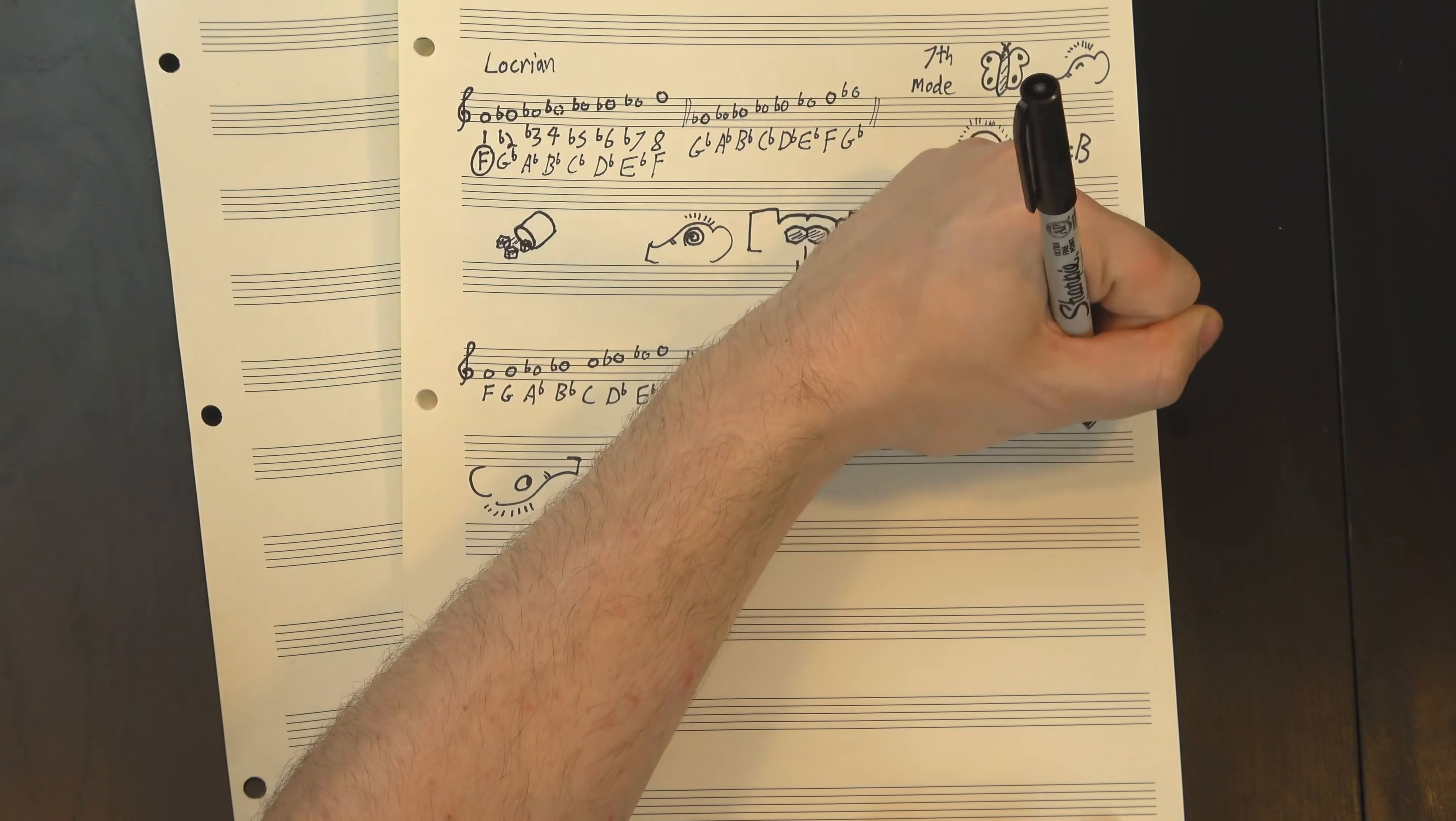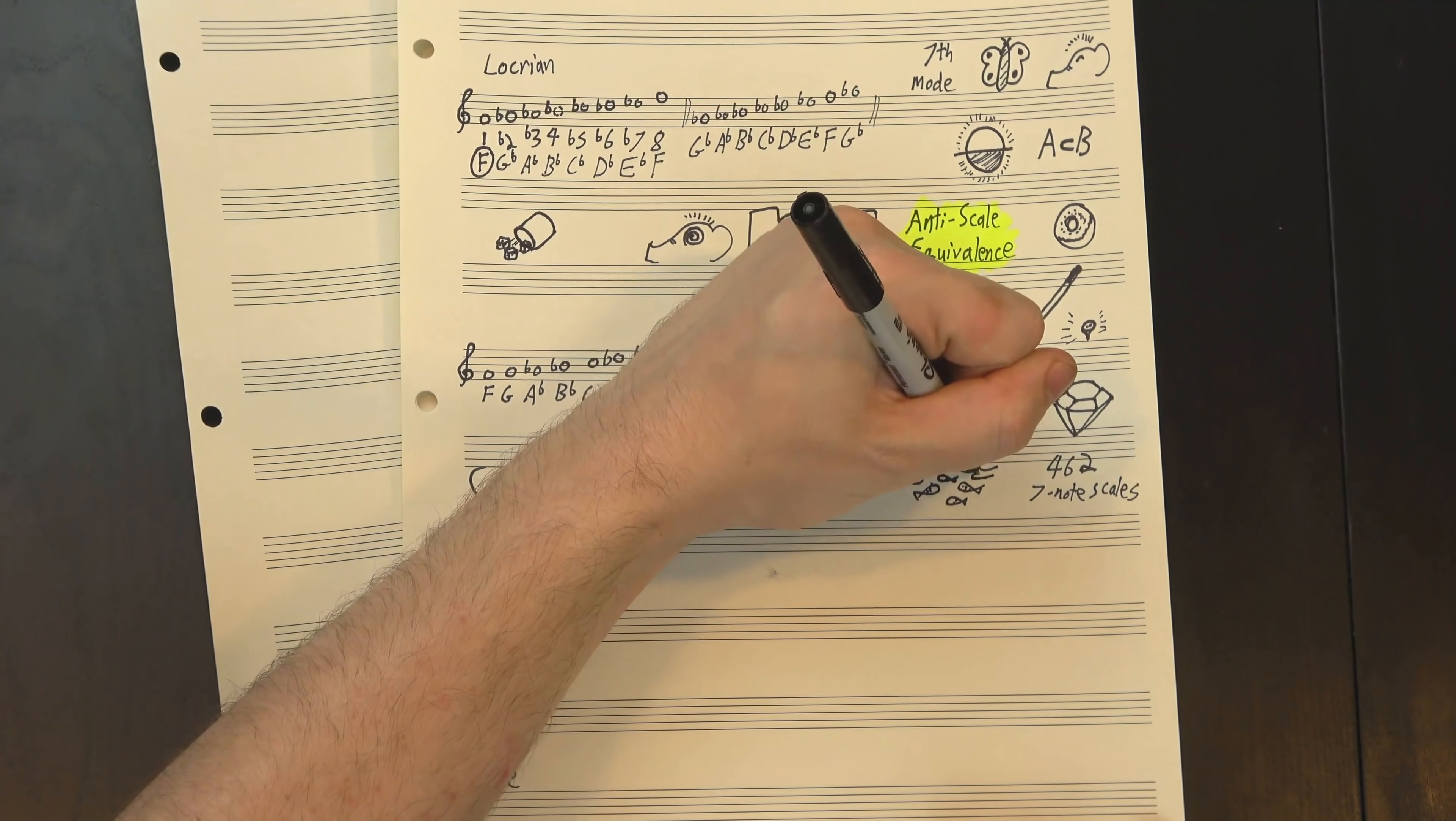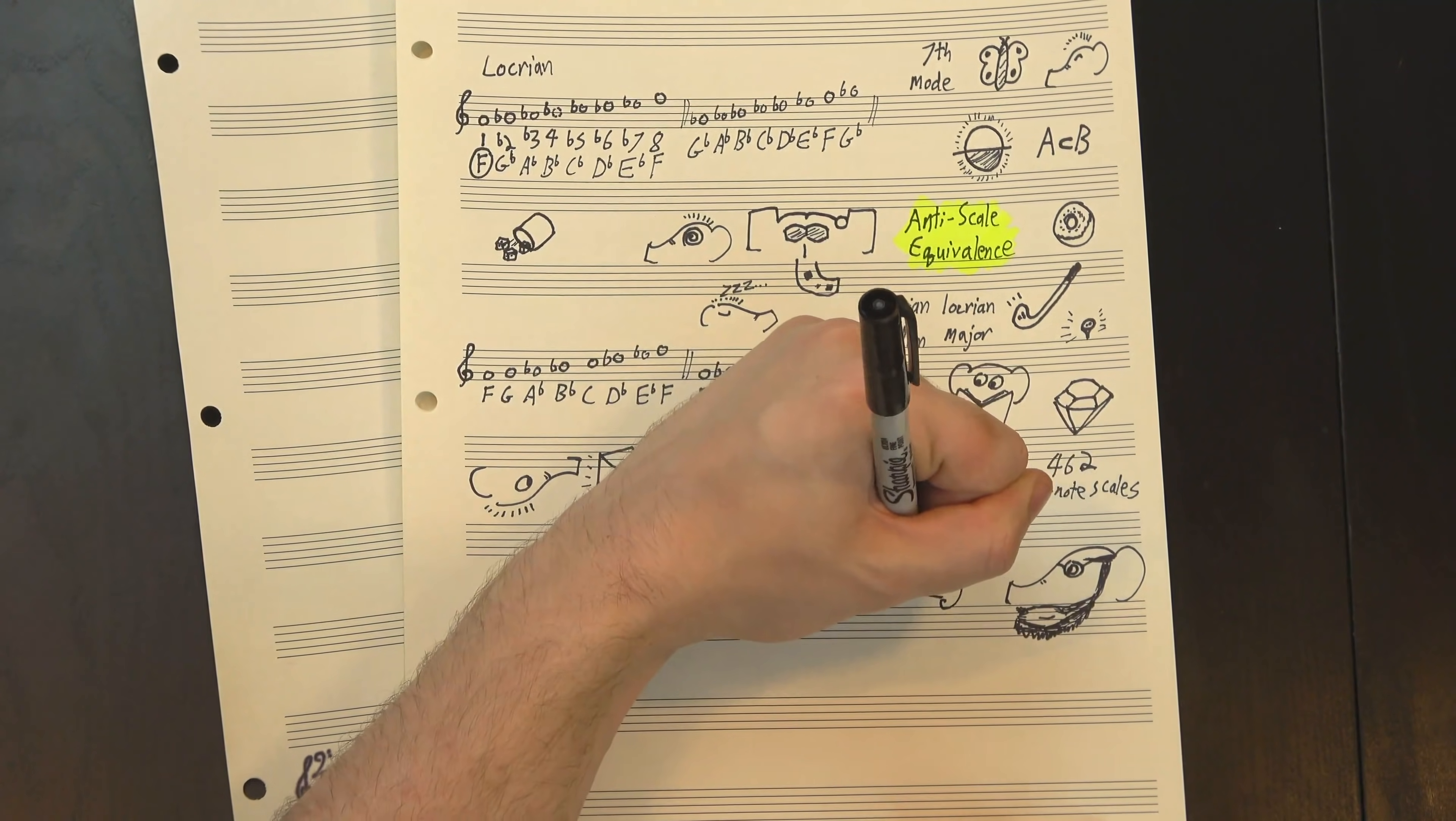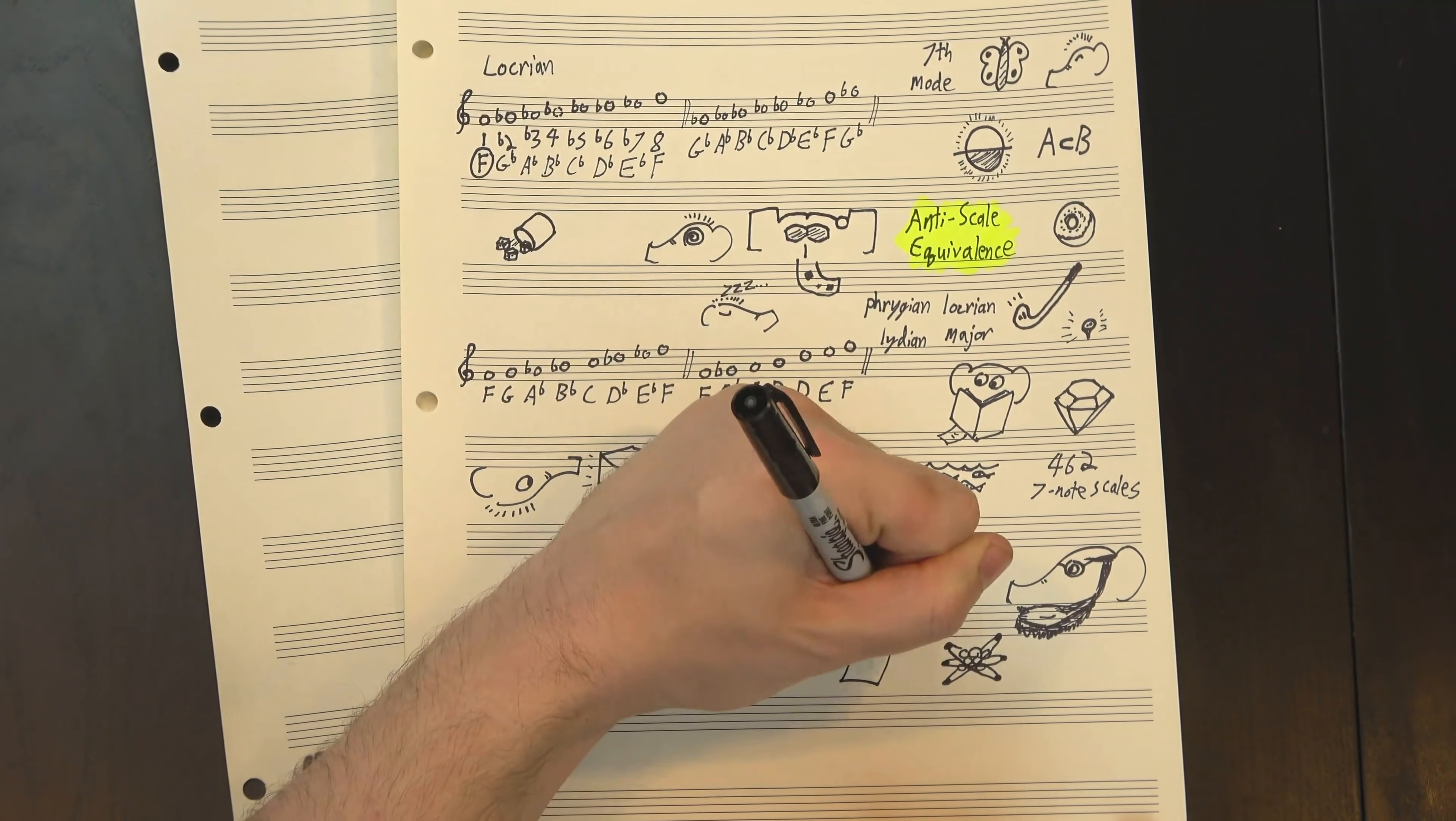So naturally, I started wondering how common this property was. Do most seven-note scales have it? Is it just these four? I sat down to work it all out and immediately got bored. In my defense, there's 462 possible seven-note scales, and I'd have to check each one's anti-scale against all its modes, which sounds exhausting. Fortunately, doing repetitive calculations on large datasets is exactly what computers are made for, and my dad happens to be a pretty accomplished programmer, so he and I worked together to write a quick program to find all the seven-note scales with anti-scale equivalence.